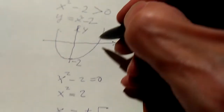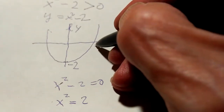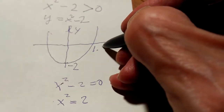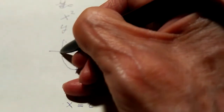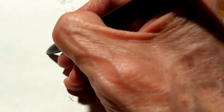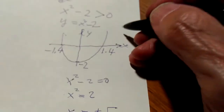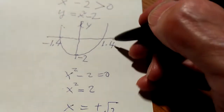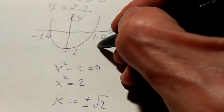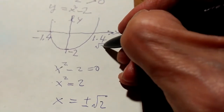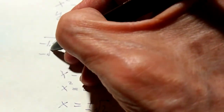So this x-intercept is roughly plus 1.2 and this is roughly negative 1.4 — oh, 1.4, it's not 1.4. If you want the exact value, this is root 2 and this point is negative root 2.